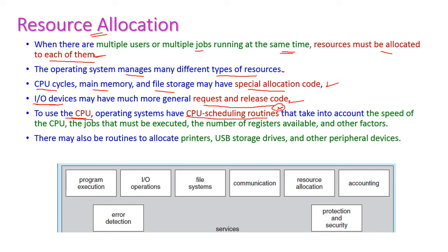CPU scheduling is important for executing processes. It takes into account the speed of the CPU, the jobs that must be executed, the number of registers available, and other factors. There may also be routines to allocate external devices such as printers, USB storage devices, and other peripheral devices.